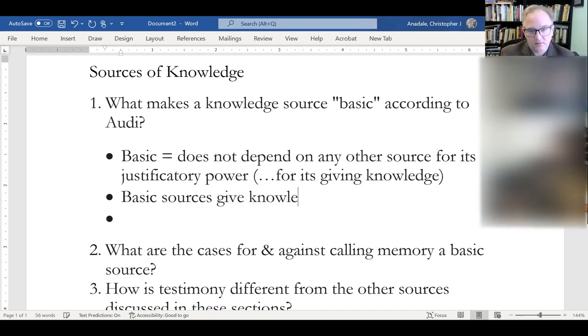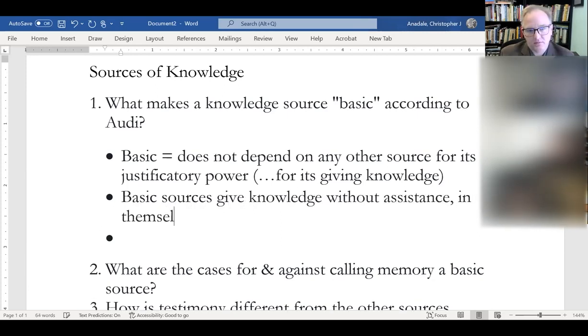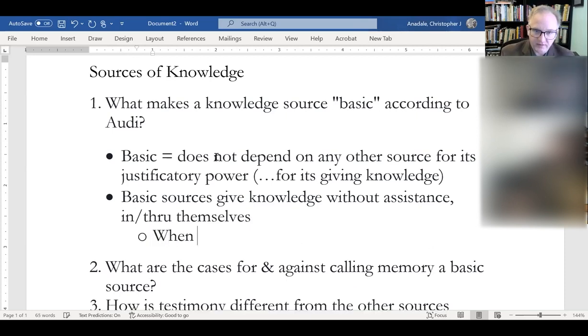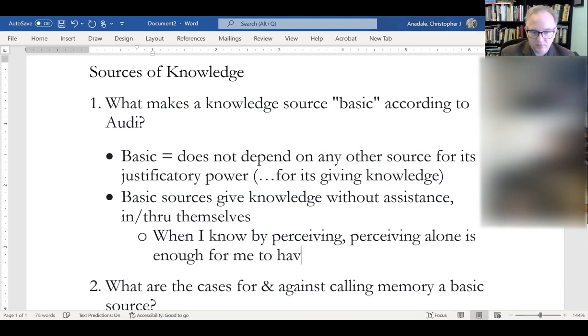We would say, say in or through themselves. So example, right? What I know through perceiving, perceiving alone, perceiving however we've defined it, taking into account all the components that it has, is enough for me to have the knowledge that comes from perceiving. He gives some examples, and I think the examples are relatively clear. When I perceptually know that the clock says 10 by virtue of seeing its face displaying the time, then I have this kind of basic source of knowing. I don't have to back it up against challenge in any other way.